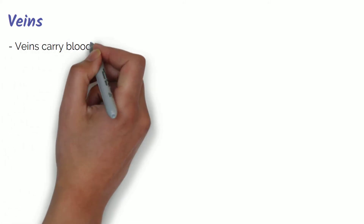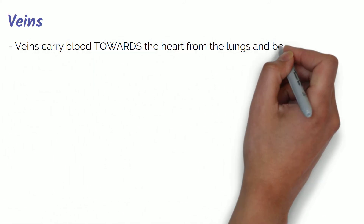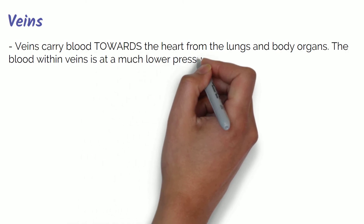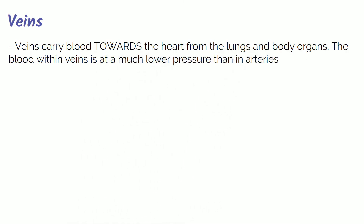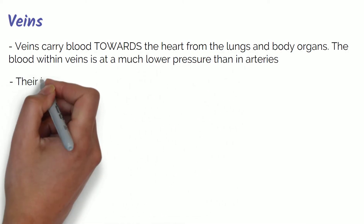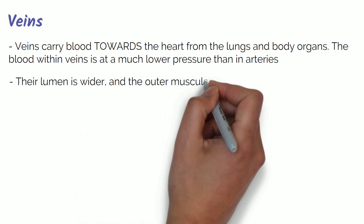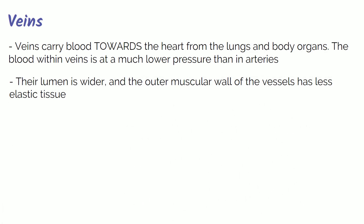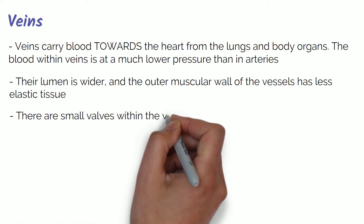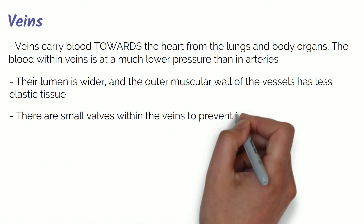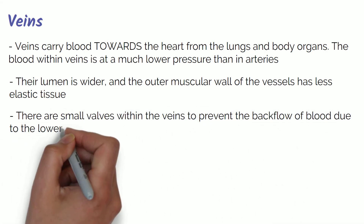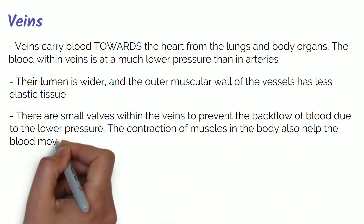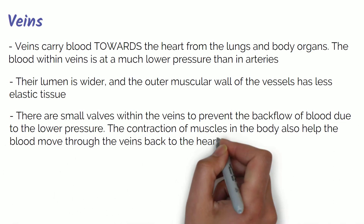Veins carry blood towards the heart from the lungs and the body organs. The blood within the veins is at a much lower pressure than in the arteries. Therefore, the lumen is wider and the outer muscular wall of the vessels has less elastic tissue. There are small valves within the veins to prevent the backflow of blood due to the lower pressure. The contraction of muscles in the body also helps the blood move through the veins and back to the heart.